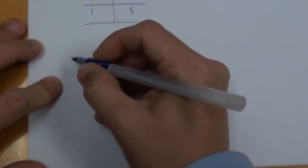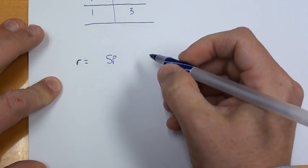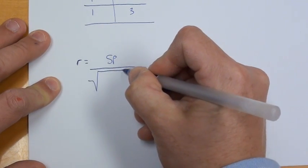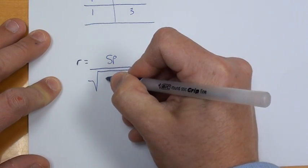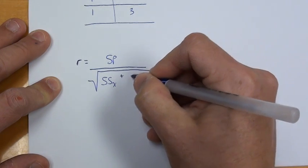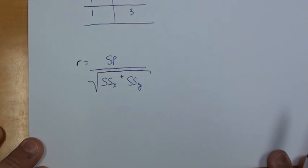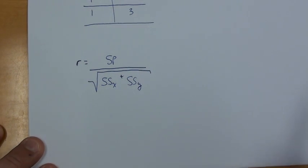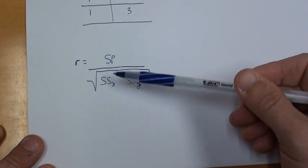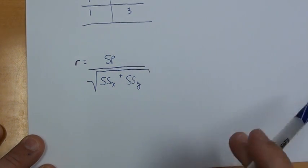Pearson's R is equal to the sum of the products divided by the square root of the sum of squares in the X values times the sum of squares in the Y value. This is your main formula for calculating Pearson's R. Now what we're going to do is break this down so that we understand how to calculate the sum of products, the sum of squares for the X and the sum of squares for the Y. And hopefully it will be fairly straightforward.